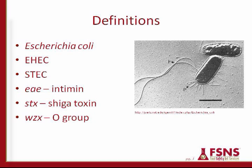There are STECs and EAE. EAE is a term that comes up quite often in testing — it's associated with the DNA and it encodes a protein called intimin, which is associated with virulence. STX is the Shiga toxin gene and there are two variants: STX1 and STX2. There's another gene involved in testing protocols called WZX, which encodes the O group associated with the outer membrane of the cells.